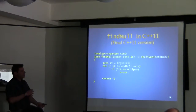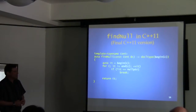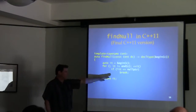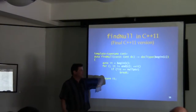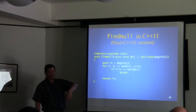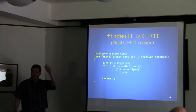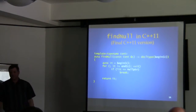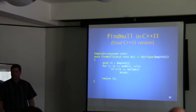Here's the last version of find_null — I've finally put nullptr in. If I were showing you the client code I'd use nullptr in that initialization list for the vector as well.